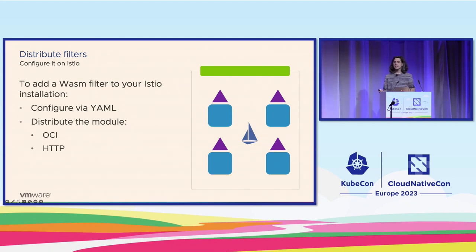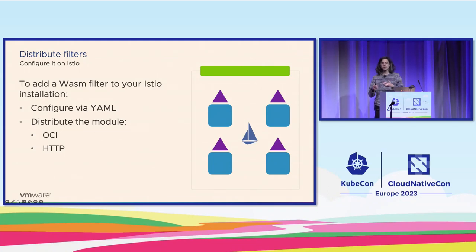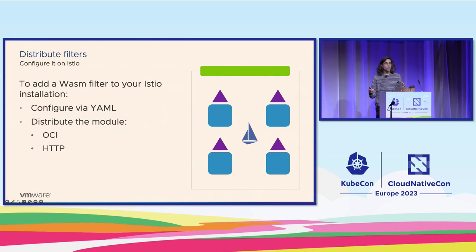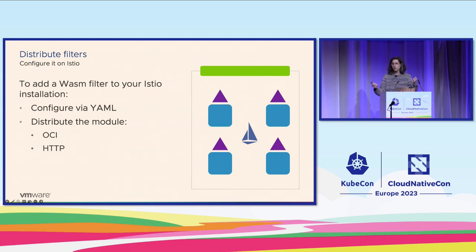You can configure WASM filters directly with a YAML configuration and point them to the specific place where the proxies can find the module — which could be an OCI registry resource or an HTTP endpoint. You can push your modules to your default registry in your infrastructure, and then pull them and configure them in the different proxies. These filters can be composed — you can configure multiple ones, not only one, and you can even match specific selectors.